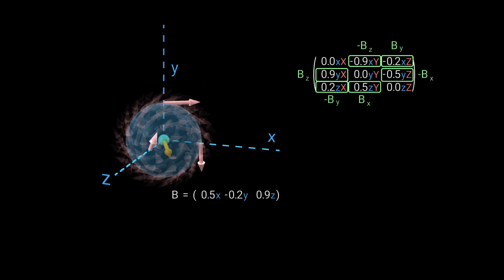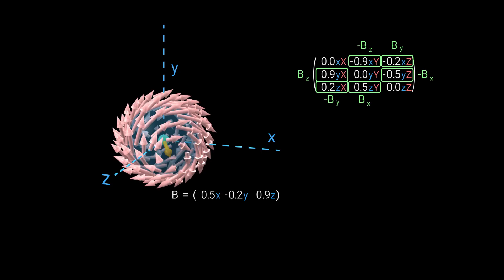So we got the components of B scattered around our matrix in a particular way. Also, the matrix is anti-symmetric. The diagonal is 0, and the part below the diagonal is the negative of the upper part. Such matrices always give us this vortex look. Here are a few more examples.